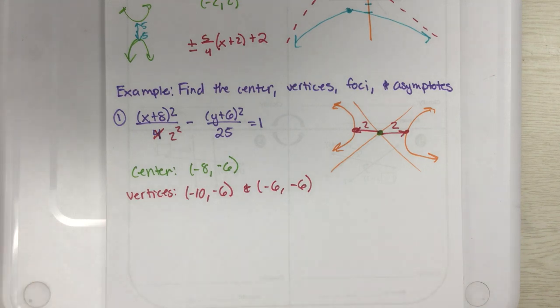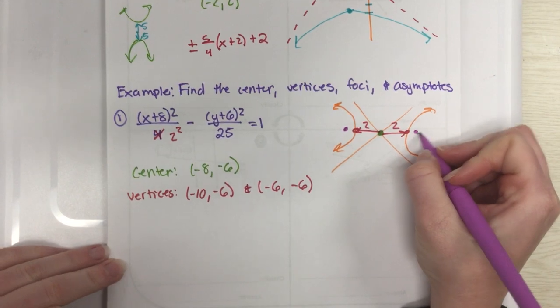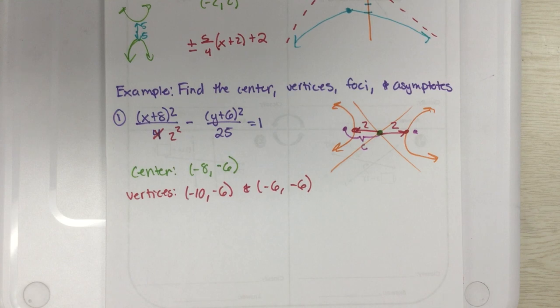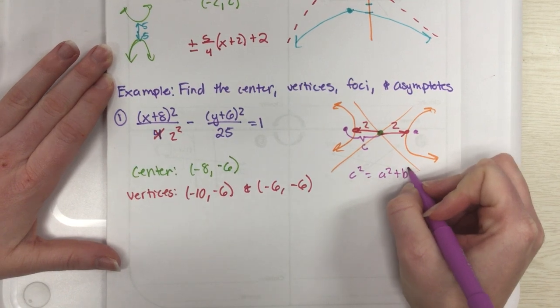All right, the next one, the foci, so that's a little bit weirder, because the foci are in here, so we need to actually find our c value. And so remember our c value this time is just literally straight up the Pythagorean theorem, because it is the positive a² plus b².